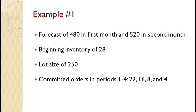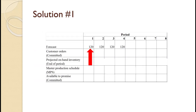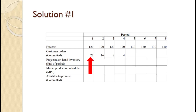In this first example, a firm has a forecast of 480 in the first month and 520 in the second month. They have beginning inventory of 28 and a lot size of 250. They have committed orders of 22 in period 1, 16 in period 2, 8 in period 3, and 4 in period 4. 480 divided by 4 equals 120, so we schedule 120 in the first 4 periods. 520 divided by 4 equals 130, so we schedule 130 in periods 5 through 8. Entering the committed orders completes the setup of this problem.